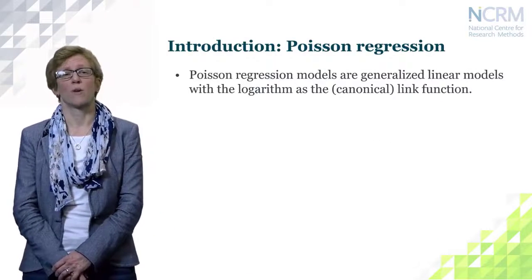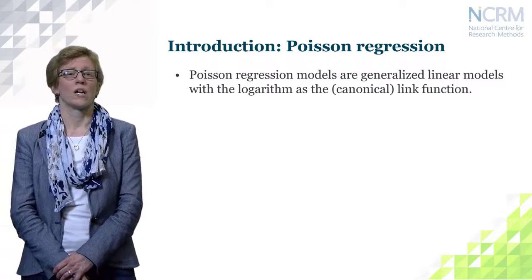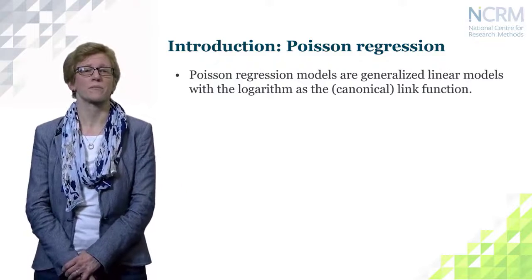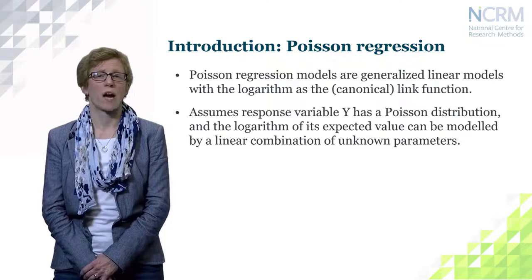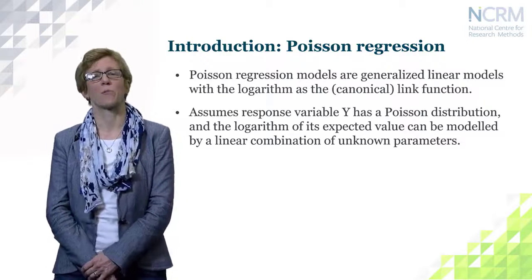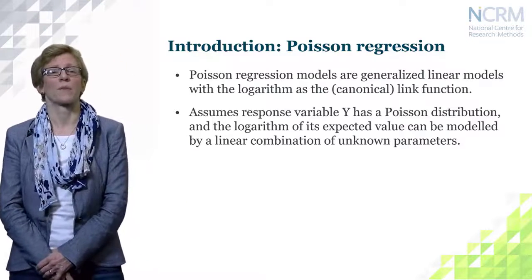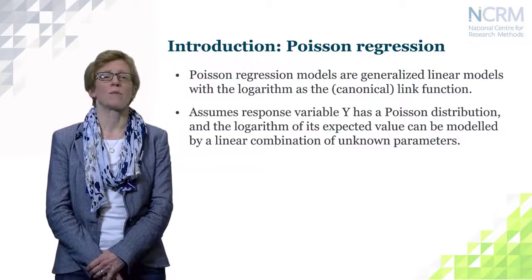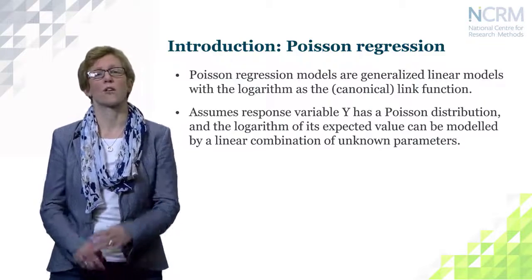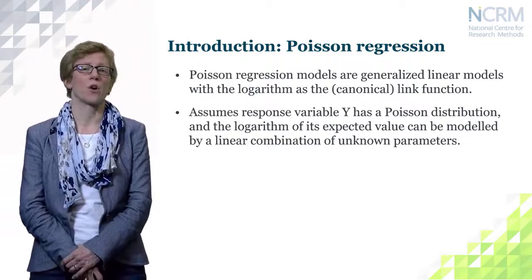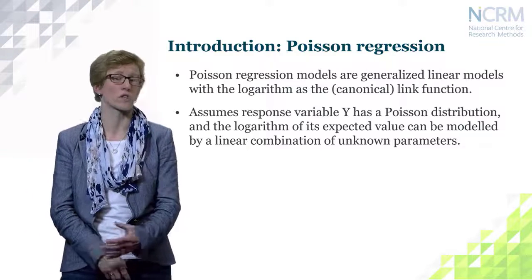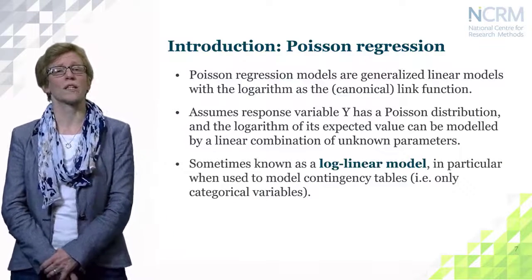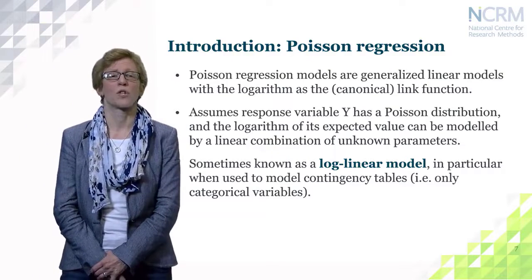Poisson regression is a form of generalised linear modelling. It uses the logarithm as the canonical link function. We assume that the outcome variable Y — the dependent variable — has a Poisson distribution, and the logarithm of its expected value can be modelled by a linear combination of unknown parameters, the beta regression coefficients. Sometimes it's referred to as a log-linear model, particularly when used to model contingency tables.